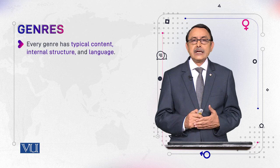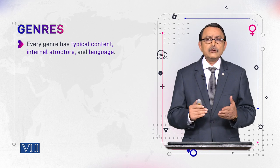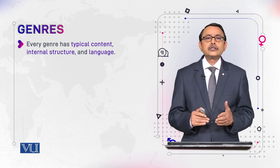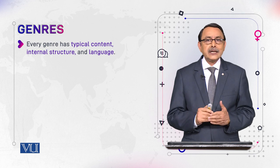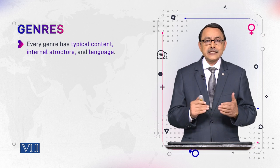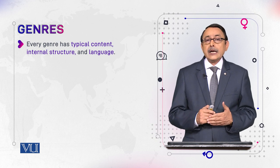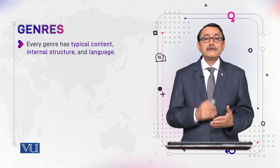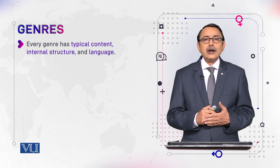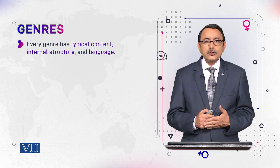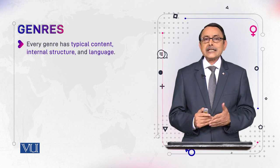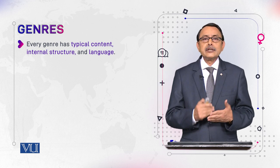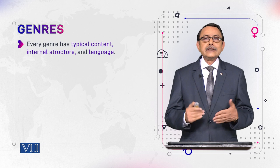Every genre has typical content. We know an editorial would have the editor's point of view on some very important issue — that is its content. Then an editorial has some structure, sequence, and frame. Thirdly, editorial language would be different from other parts of the newspaper, for example from a news report or sports news. When we combine these three things — content, structure, and language — that is typically used in a text, we call it Genre.